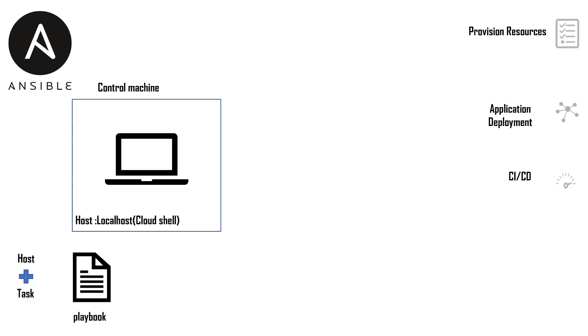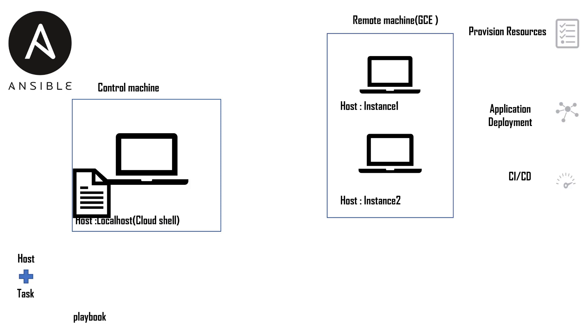When provisioning resources for the first time, the host would be the local host, and the task would be all the tasks needed to create your resources — like Compute Engine, Cloud Function, or any other GCP resources. This playbook is read by the control machine and based on its configuration it can create instances, Compute Engine, or Cloud Functions. When provisioning resources, the host will always be the local host on which you are running the control machine.